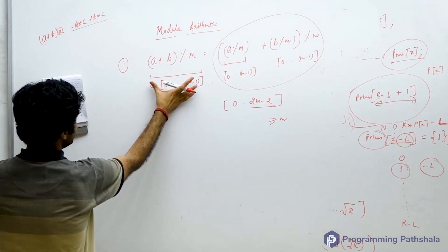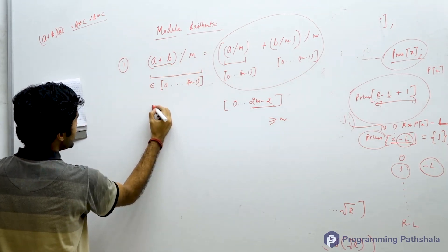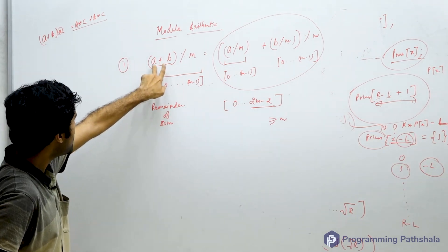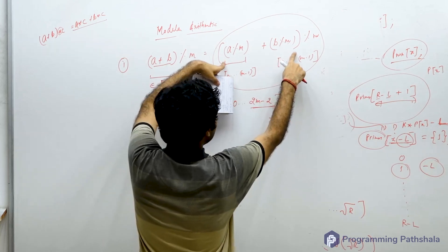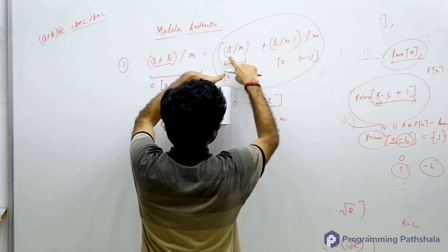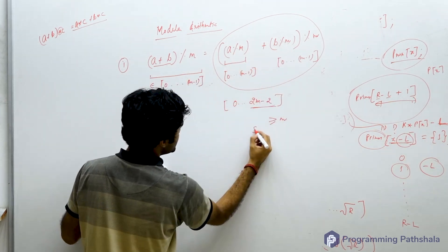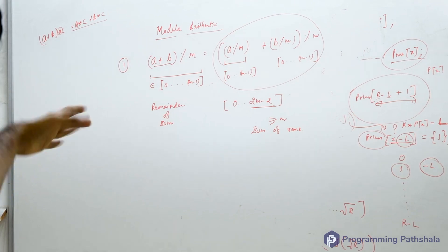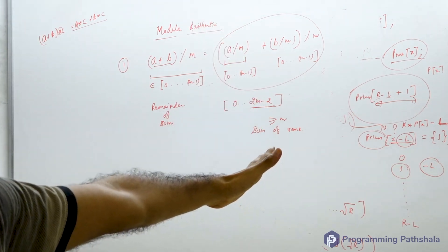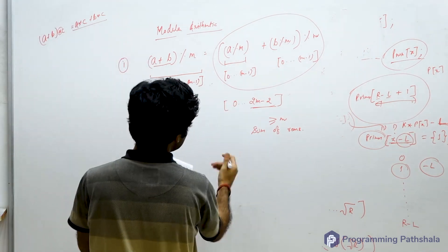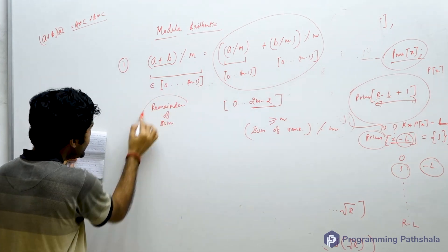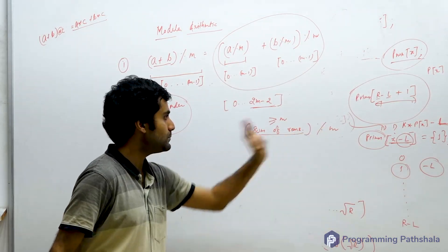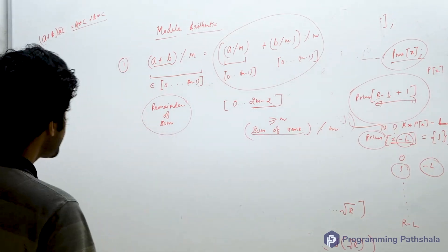There is a very important physical significance to this — it is not a mere mathematical equation. The left-hand side is the remainder of a sum. The right-hand side, ignoring the final mod m, is the sum of remainders. So: remainder of sum equals sum of remainders, mod m. This is a very versatile statement. One purpose is to prevent integer overflow by cycling back to something smaller, but that is just a small application.